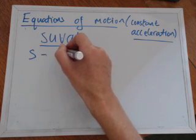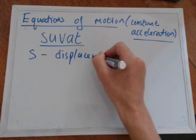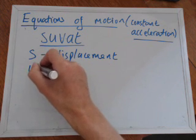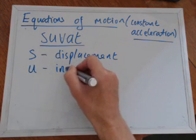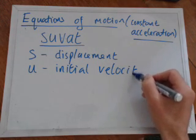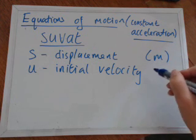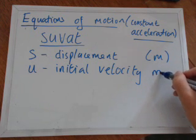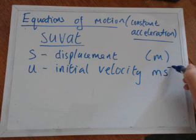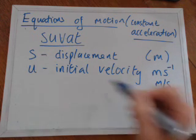As they are directional and they're vectors, S must be displacement in meters, rather than sometimes called distance. U is the initial velocity in meters per second, which is ms to the minus one. You may be more familiar with meters per second, but we need to learn to write things like that.